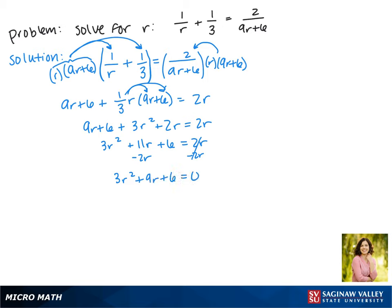Now with our coefficients of 3, 9, and 6, they all have a factor of 3. We can simplify it by dividing each one by 3, and we get r squared plus 3r plus 2 equals 0. The factors of 2 that will give us a 3 are 2 and 1. So our solutions are r equals negative 2 or r equals negative 1.